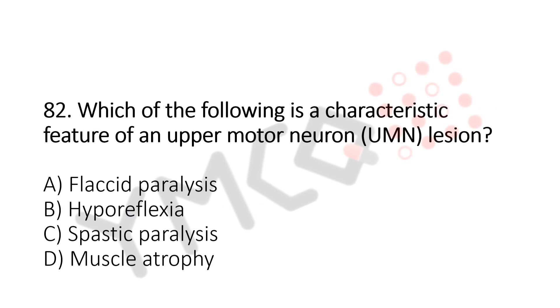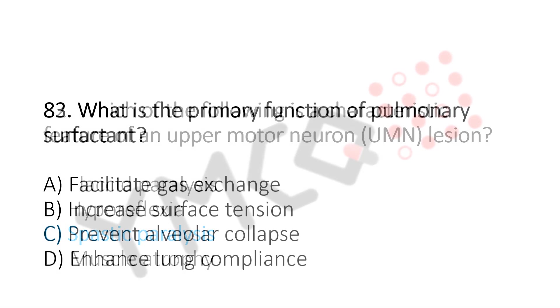Which of the following is a characteristic feature of upper motor neuron lesion? Option A: flaccid paralysis. Option B: hyporeflexia. Option C: spastic paralysis. Option D: muscle atrophy. Let us move to question number 83.